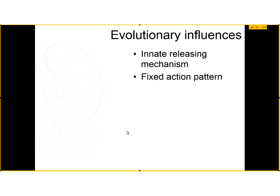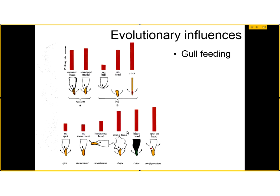Let's look at a couple of examples of innate releasing mechanisms and fixed action patterns. Our first example comes from gull feeding. When gulls return to the nest to feed their young, the young must peck at the beak of the parent, which causes the parent to regurgitate food into the offspring's mouth. Researchers were interested in what was the critical stimulus — the innate releasing mechanism — that triggers this pecking behavior in the infants. The red bars here indicate the pecking rate of the offspring.